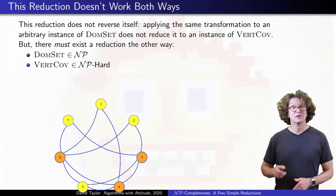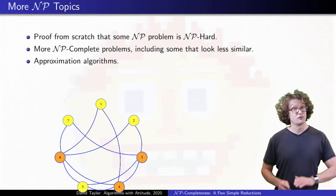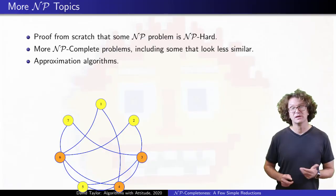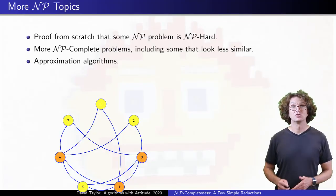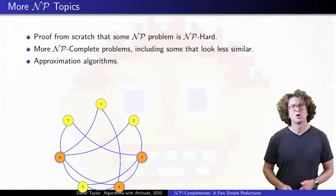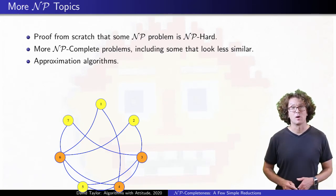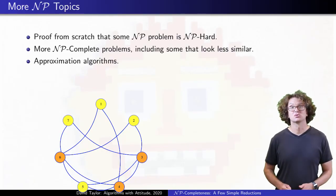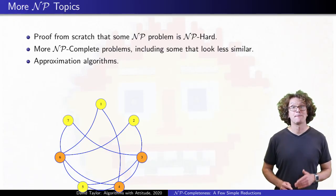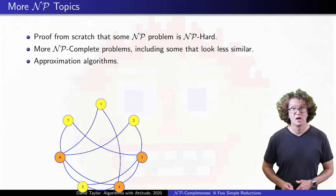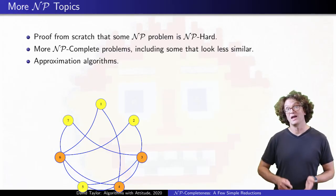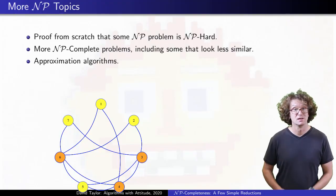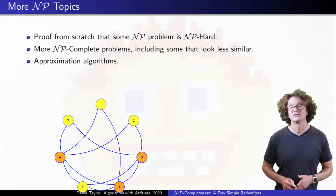This is a huge topic. The next thing to cover is a proof from scratch that some NP problem is NP-hard — I took it as given that clique is NP-hard, but we should prove that. The problems we used here were all similar-looking graph problems, but there are NP-complete problems in pretty much any area, and you could make an entire course out of studying approximation algorithms — polynomial time algorithms that don't perfectly solve optimization versions of NP-complete problems, but that can guarantee their performance isn't too bad.